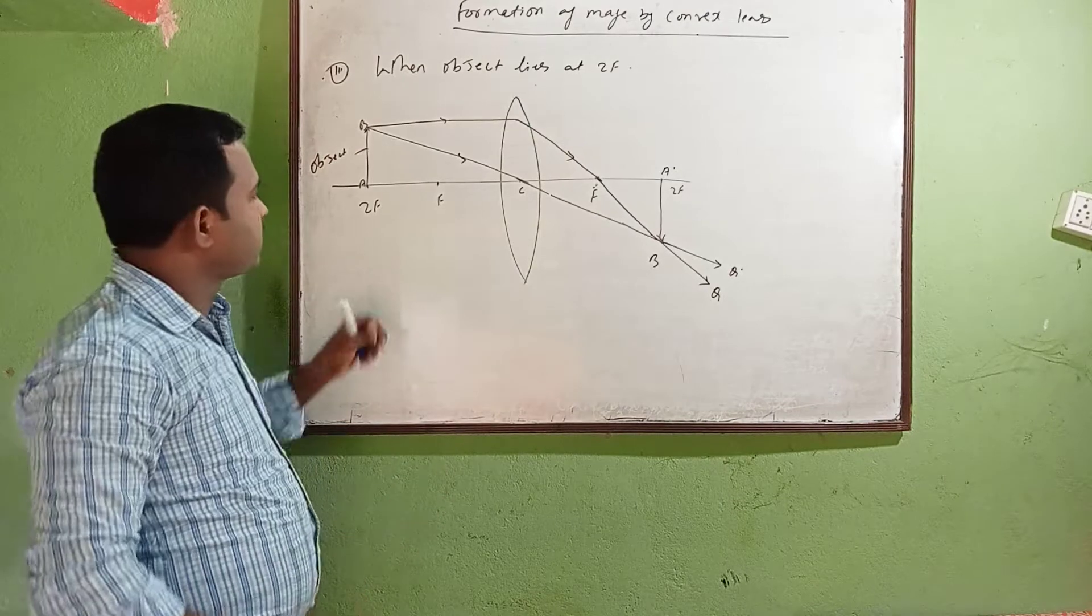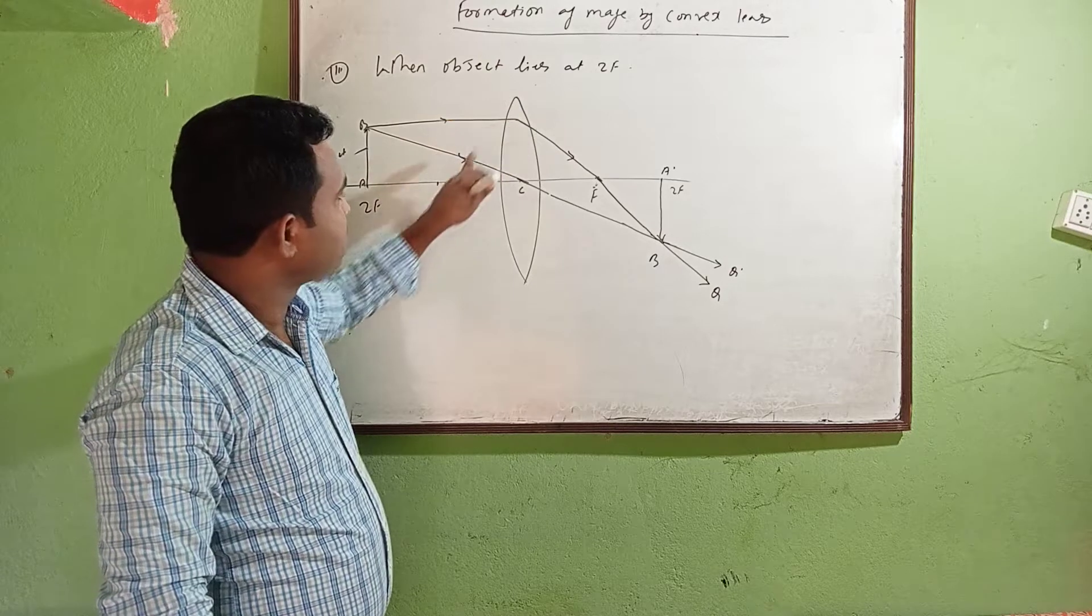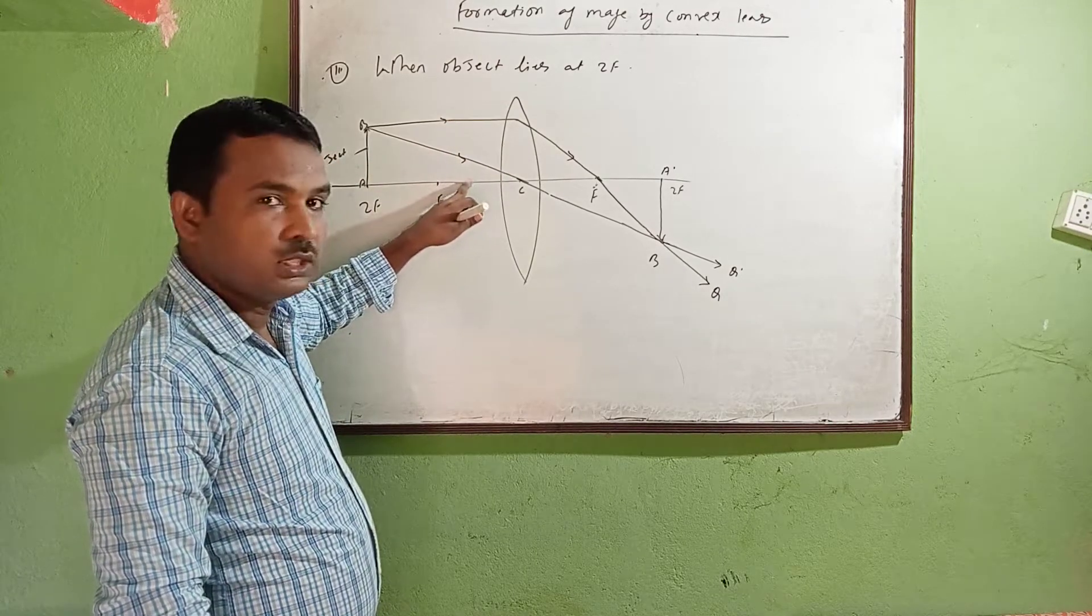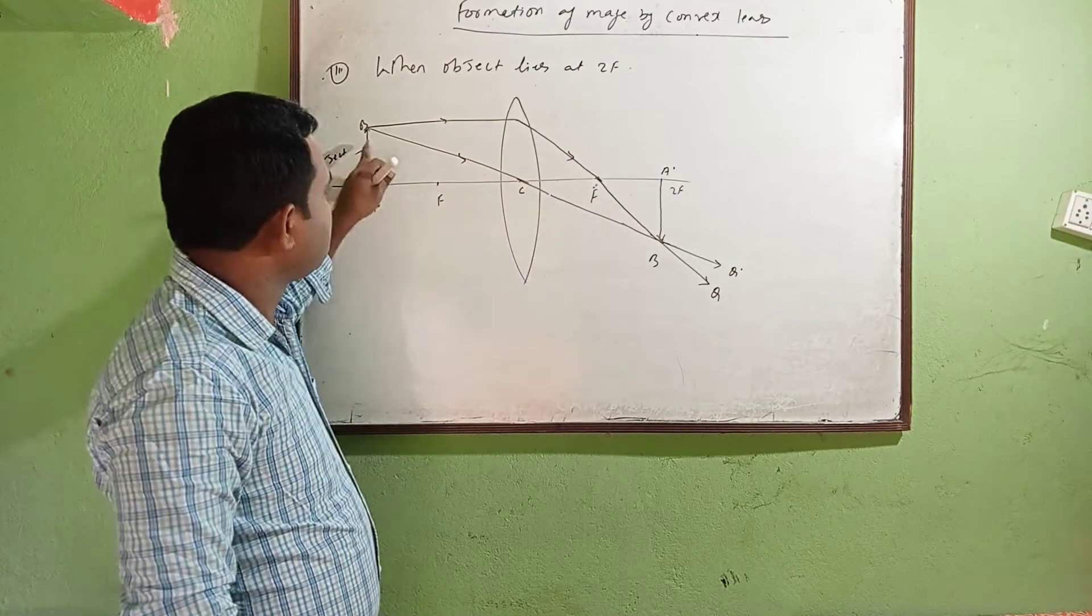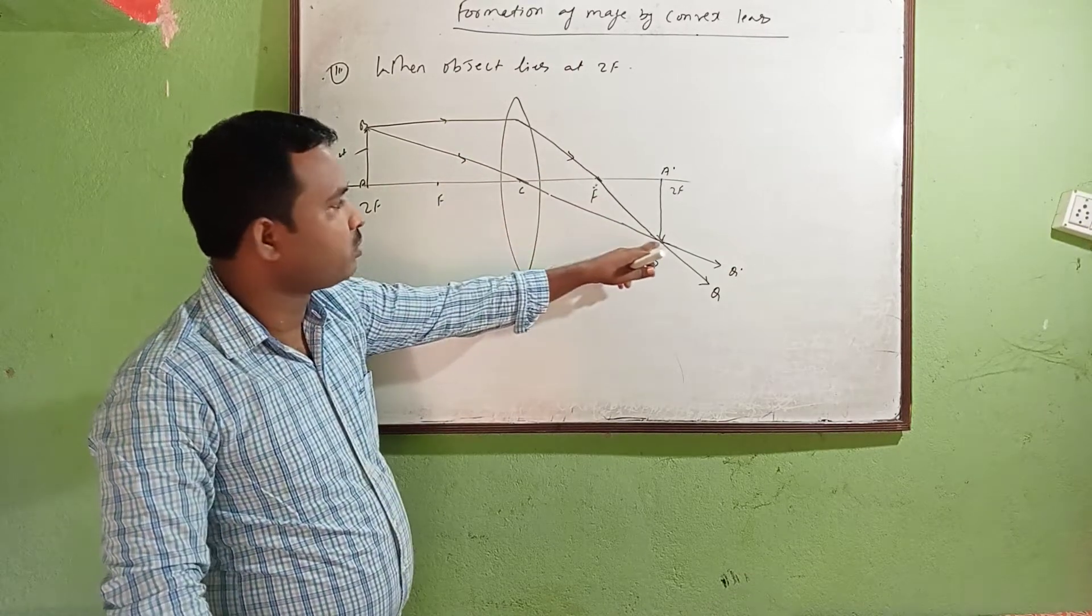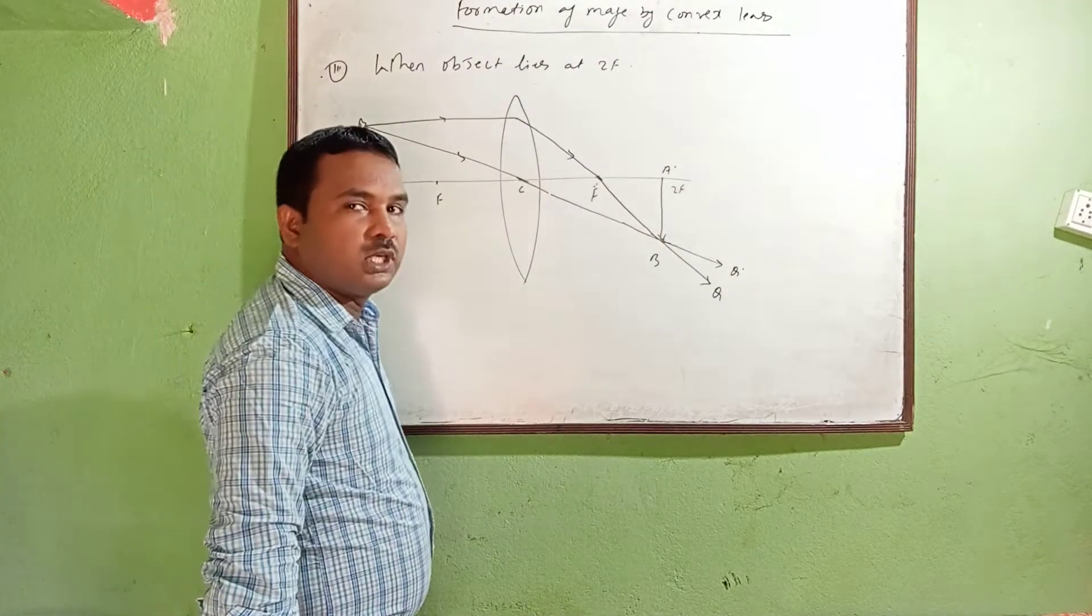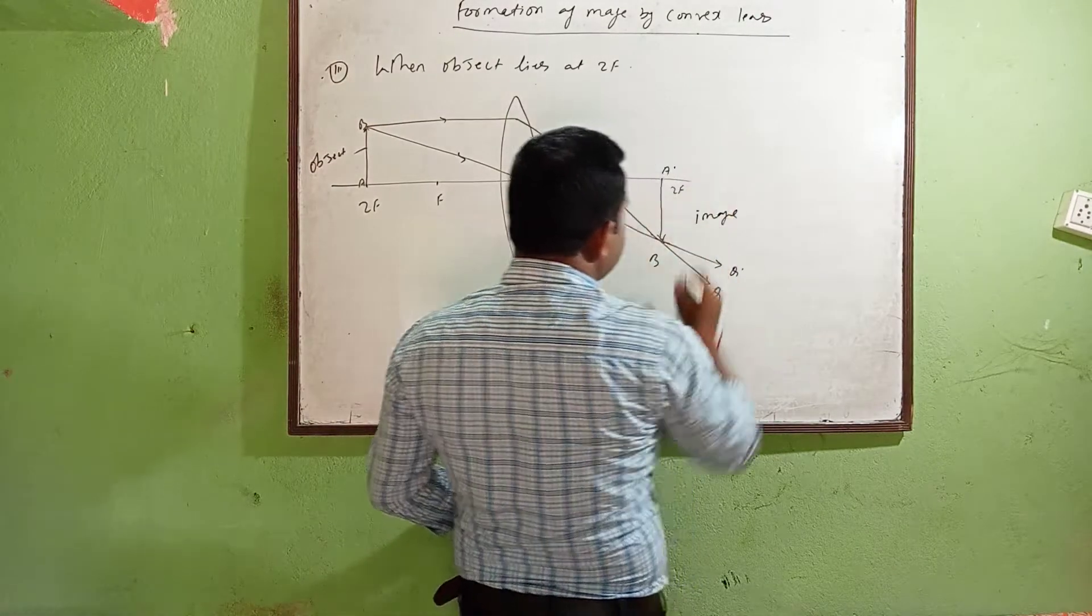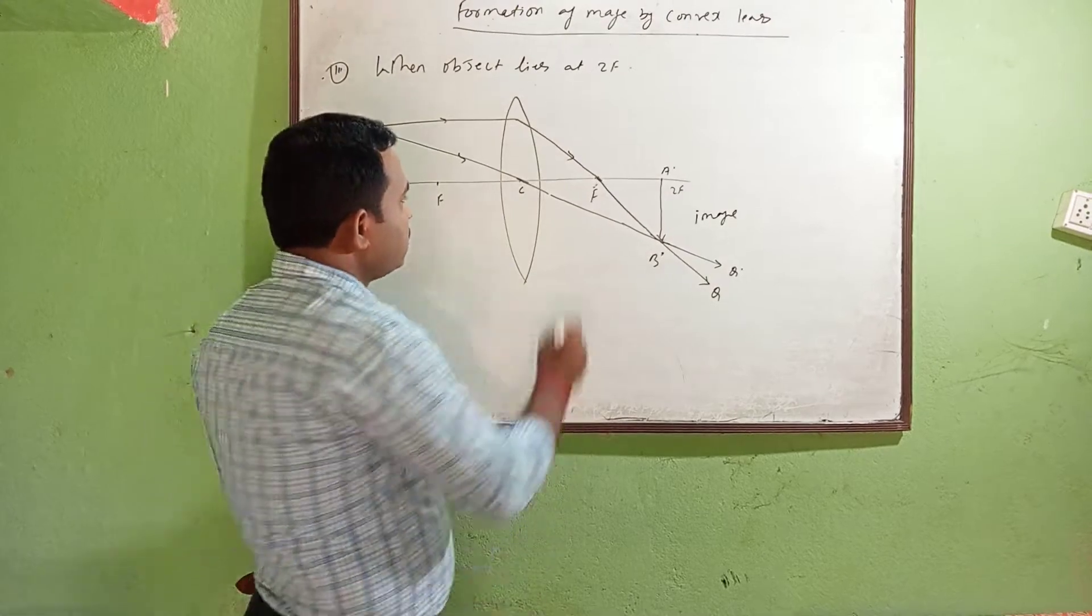AB is the object which lies at 2f. When the ray of light passes or travels parallel to this line or axis, it will pass through the focus. Another ray will directly pass through the optical center. Both rays of light will intersect at a particular point, so we call this the image.